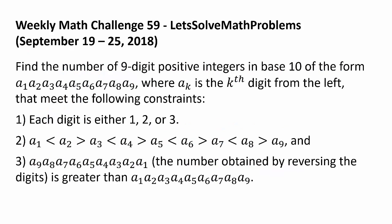Find the number of 9-digit positive integers in base 10 of the form a₁a₂a₃a₄a₅a₆a₇a₈a₉, where aₖ is the kth digit from the left that meet the following constraints. Each digit is either 1, 2, or 3.